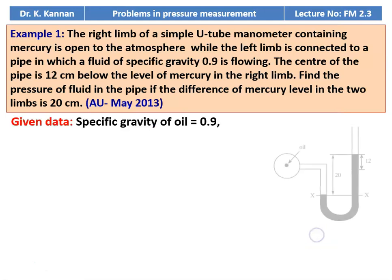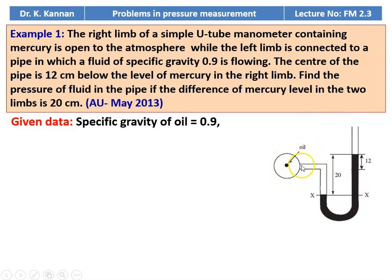Example number 1. The right limb of a U-tube manometer containing mercury is open to atmosphere, where the left limb is connected to a pipe in which a fluid of specific gravity 0.9 is flowing. The center of the pipe is 12 centimeters below the level of mercury on the right limb. Find the pressure of the fluid in the pipe if the difference in mercury level in the two limbs is 20 centimeters. This is the pipeline in which oil is flowing, connected to the U-tube manometer.